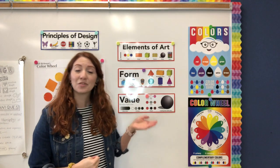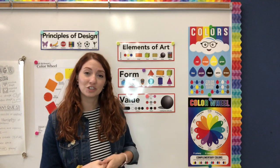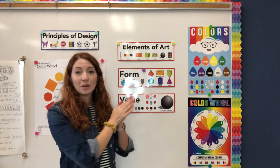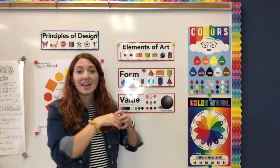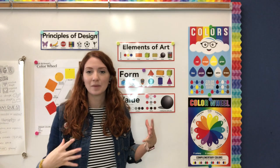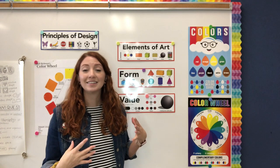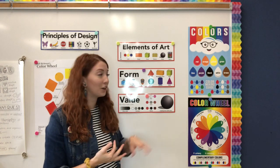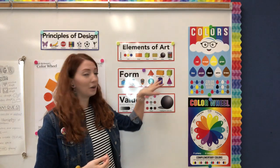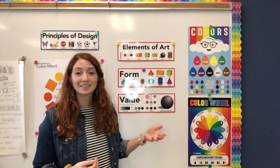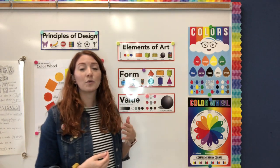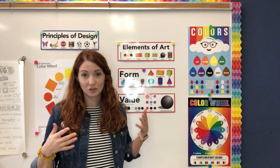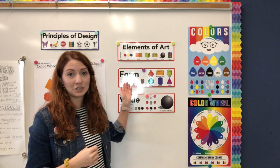Form is a three-dimensional shape. A shape is flat — it's 2D. Whenever it becomes a form, it comes to life and it's three-dimensional. Examples of forms are cylinders, spheres, cones, pyramids, and things like that. So we're going to be drawing our box three-dimensionally to turn it into a form.